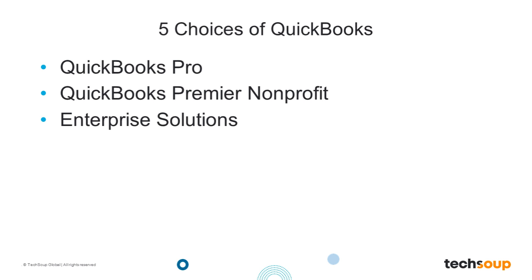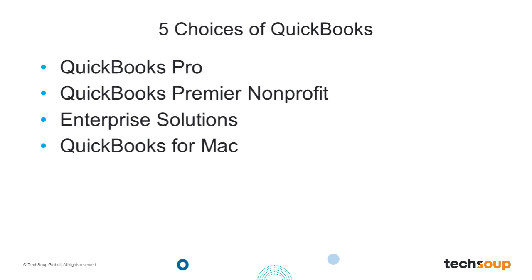Those first three choices are software you either purchase online and download to your PC, or buy in a store and load from disc — all for PC-based computers. If you have a Macintosh and want to download software to your computer, your choice is QuickBooks for Mac. It's very much like QuickBooks Pro, and pretty much everything covered today you'll be able to do on a Mac.